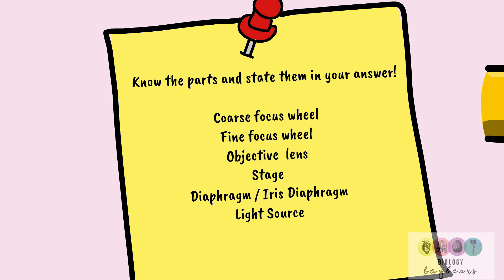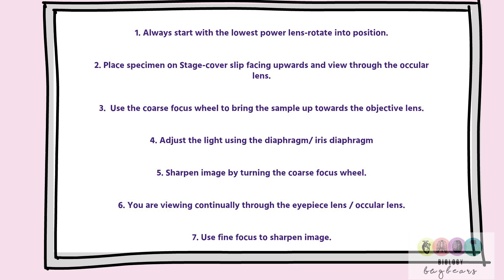Always start with the lowest power lens — just click or rotate it into position. Place your specimen on the stage with the cover slip facing upwards and look through the ocular lens. Use the coarse focus wheel to bring the sample up towards the objective lens. Adjust the light using the diaphragm or iris diaphragm, then use the coarse focus wheel to sharpen the image while looking through the ocular lens or eyepiece, and finally use the fine focus to sharpen the picture.